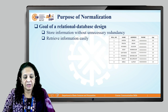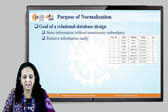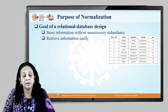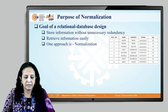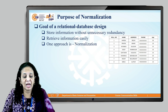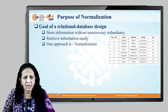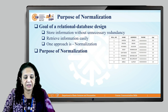The second goal of relational database design is to retrieve information easily. Whatever information is stored in the database for a particular organization, we need that information to be retrieved easily. For example, if I want the name of a student with roll number 5, it should be retrieved easily. The purpose of normalization is to achieve these goals of relational database design. When we convert tables through normalization, we say that the database is in good form.